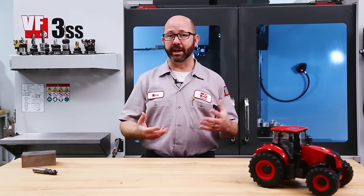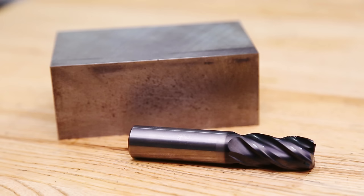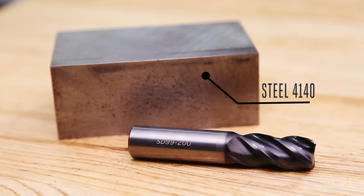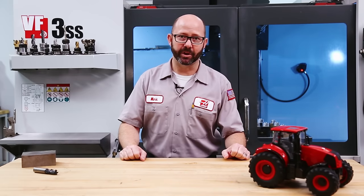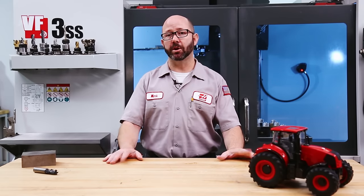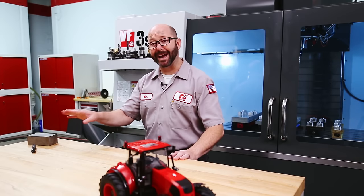Before we open up our catalog and get our cutting speed — before the tractor even leaves the barn — we need to know exactly what cutting tool we're going to use, and we need to know exactly what material we are going to be cutting. Today's tools have coatings on them that might double their allowable cutting speeds, so we really need to know what tool we are working with. With our exact tool number in hand, we can go to our tool catalog.